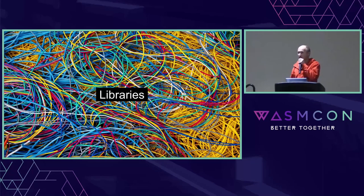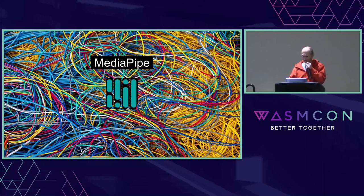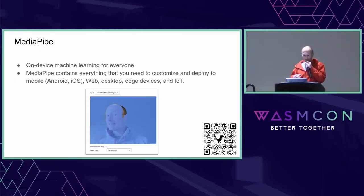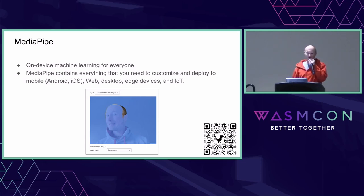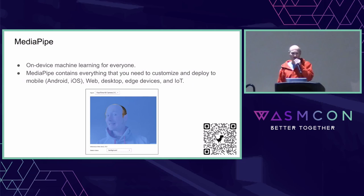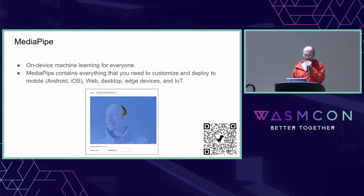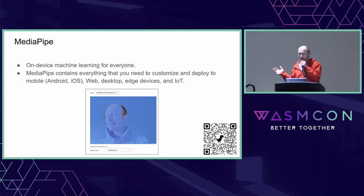Let's talk about libraries. The first is MediaPipe. You can test it directly on your devices — for example, a hair detection model that can detect hair. MediaPipe needs to run on various platforms: Android, iOS, the web, and also IoT and edge devices. All made possible by the MediaPipe library.